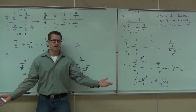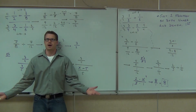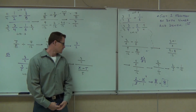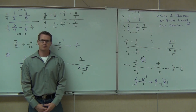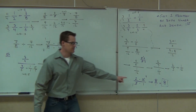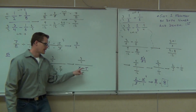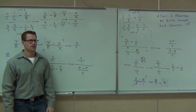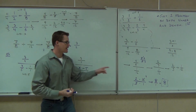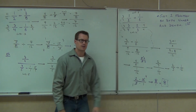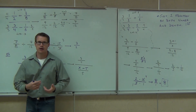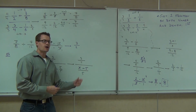Also, can you simplify or cancel the fives? No — you cannot cross out across subtraction. When you have things that are added or subtracted, they're terms, and you can never cancel terms. You can only cancel factors — things that are multiplied together. So now we do have one fraction over one fraction and we can proceed.